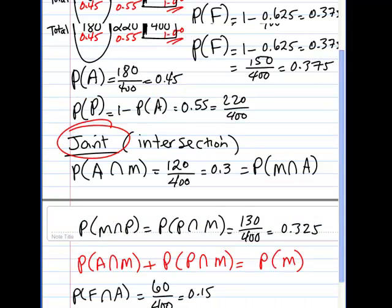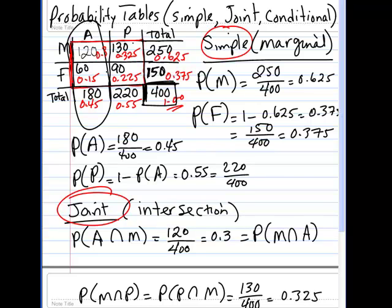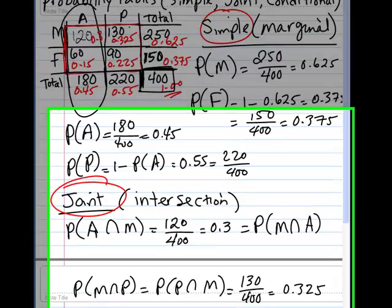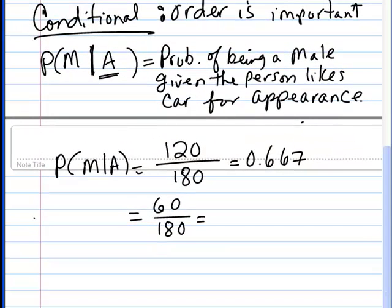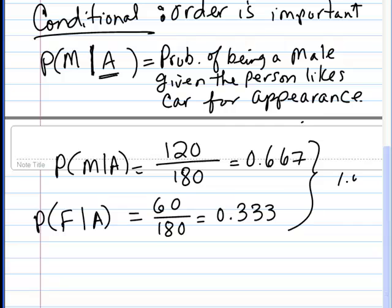So if we have 180 individuals who buy a car because of its appearance, and out of those 180, 120 of them are male, the balance which is female would give me the probability of being a female given that you buy a car because of its appearance. And that number would be 0.333. These numbers add up to 1 because the subgroup is comprised of 180 people, and male and female are the two subcategories.